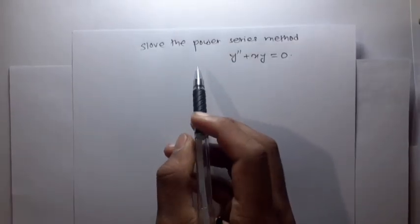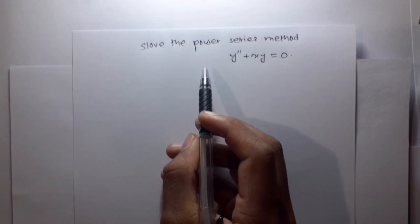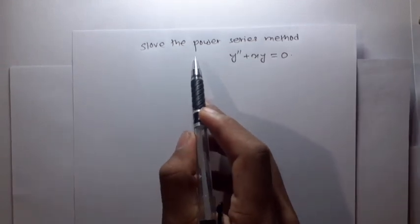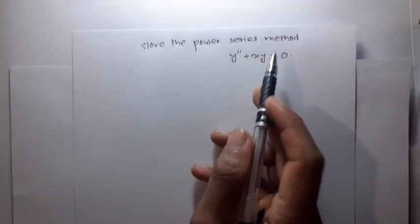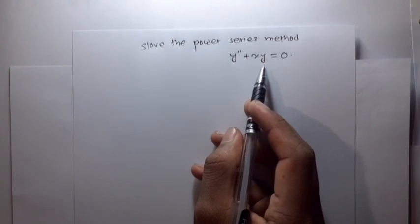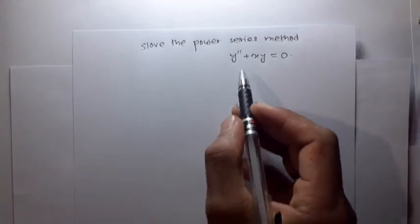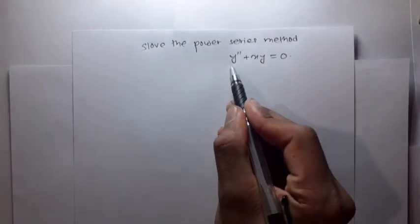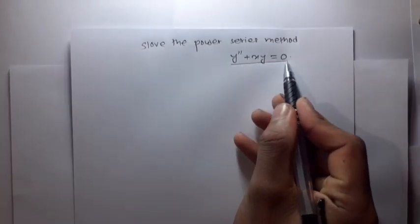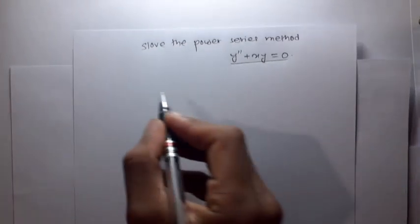One of the most important questions: solve using the power series method — y double dash plus x times y is equal to 0. This is a power series method solution.